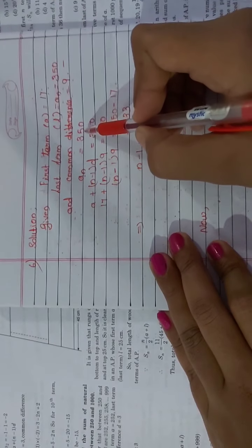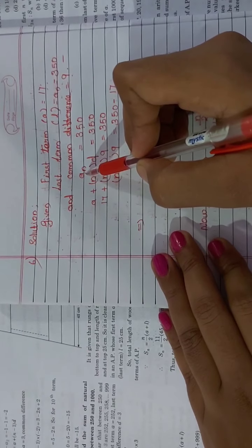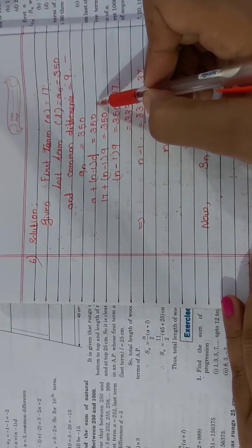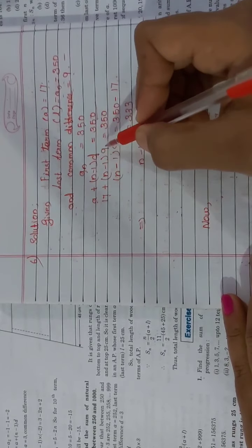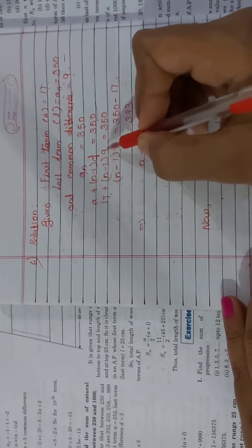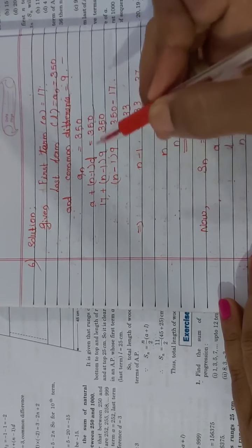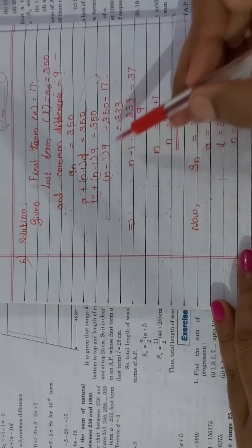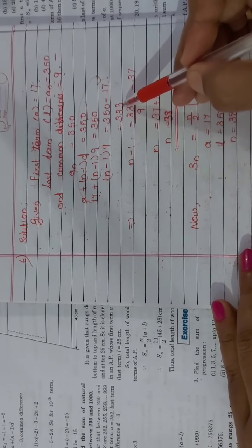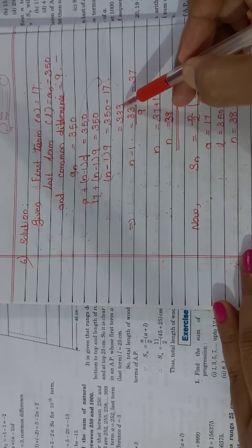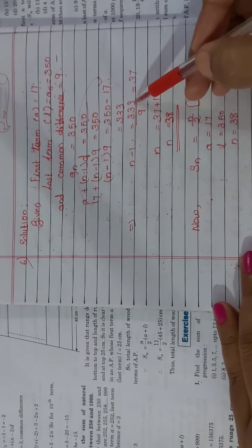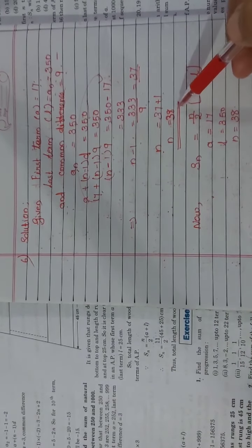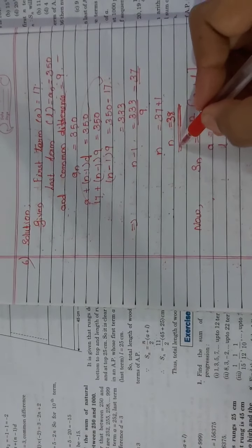We know that AN equals 350, and the formula for the Nth term is A plus N minus 1 into D. So 17 plus N minus 1 into 9 equals 350. Therefore N minus 1 into 9 equals 350 minus 17, which is 333. So N minus 1 equals 333 divided by 9, which is 37. Therefore N equals 37 plus 1, which is 38.